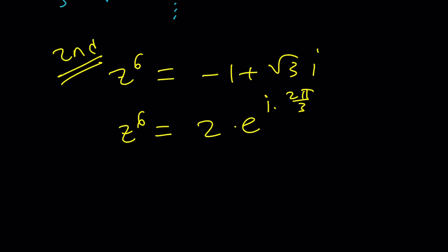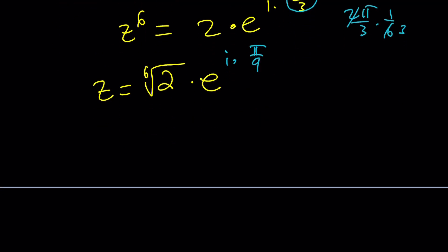Now we can go ahead and take the sixth root directly. If you do that, that's going to be the sixth root of 2 times e to the power, now you're supposed to divide the argument by 6, or multiply by 1/6. 2 pi over 3 times 1 over 6 is just going to be pi over 9 as before. We got the same argument. And now, since you have to split 2 pi into 6 pieces, which is pi over 3 or 3 pi over 9, you can just increment by that and you'll get all the solutions.